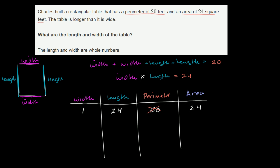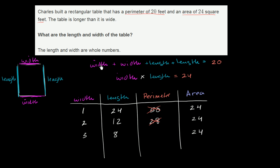Let's try the other factors of 24. It could be 2 and 12. 2 times 12 is 24, but what's 2 plus 2 plus 12 plus 12? That's 4 plus 24, which is 28. That doesn't meet our perimeter constraint. What about 3 and 8? 3 times 8 is also equal to 24. And 3 plus 3 is 6, plus 8 plus 8 is 16. 6 plus 16 is 22. Still not a perimeter of 20, so that's not going to be right.